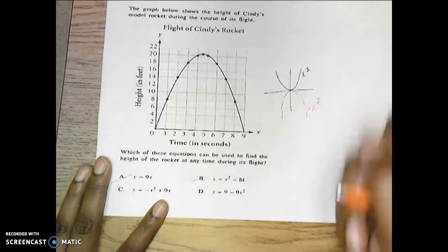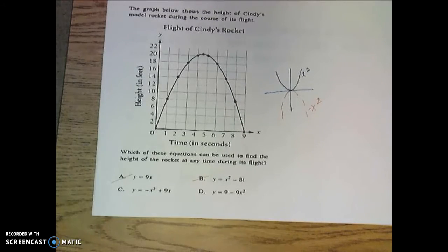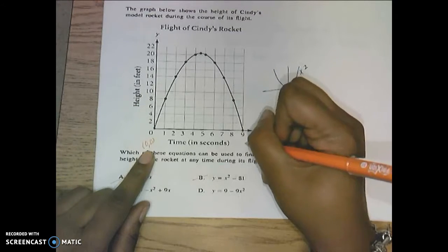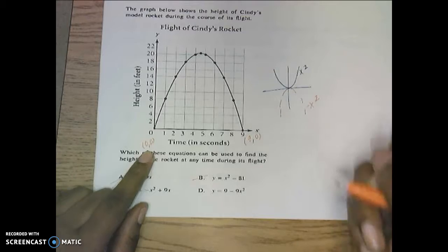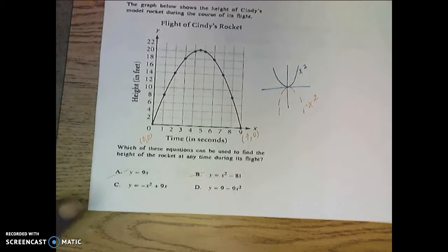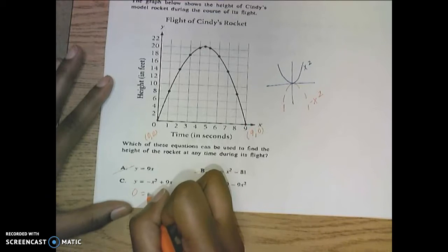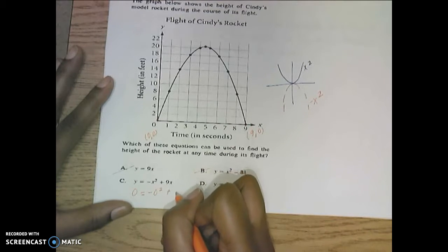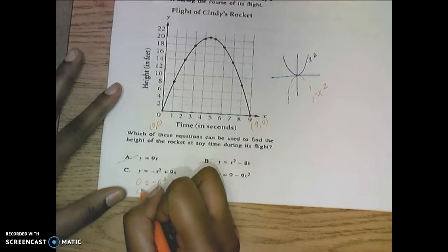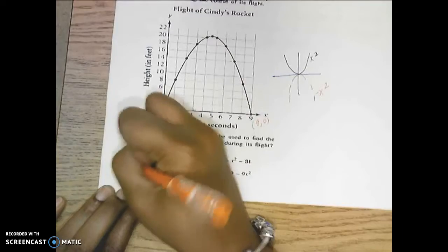Now your next choice would be to decide. 0, 0, the origin is a solution, and 9, 0 is a solution. Now for me, this point here, 0, 0, would be the one of choice only because I don't have to deal with a 9. If I plug in a 0 for x, I should get a 0 for y, meaning that that has to be a solution. So I'll start here. 0 on y is equal to a negative 0 squared plus 9 times 0. Now hopefully, we know that 0 is equal to 0 squared is 0. 9 times 0 is 0. C is your answer.